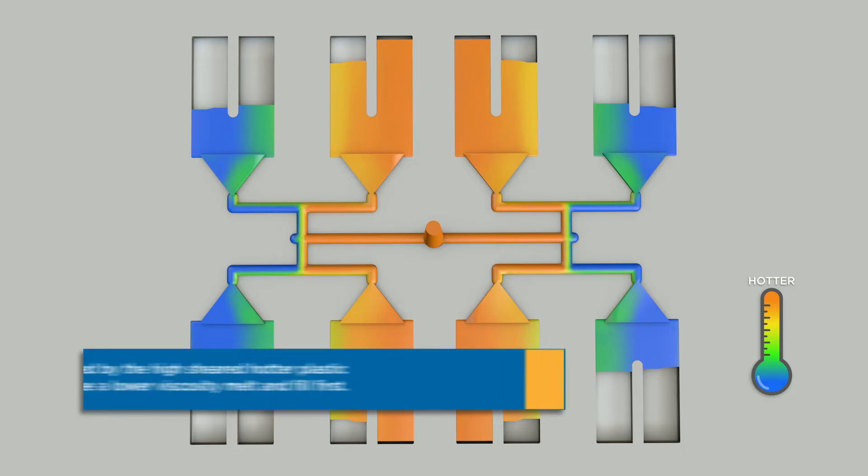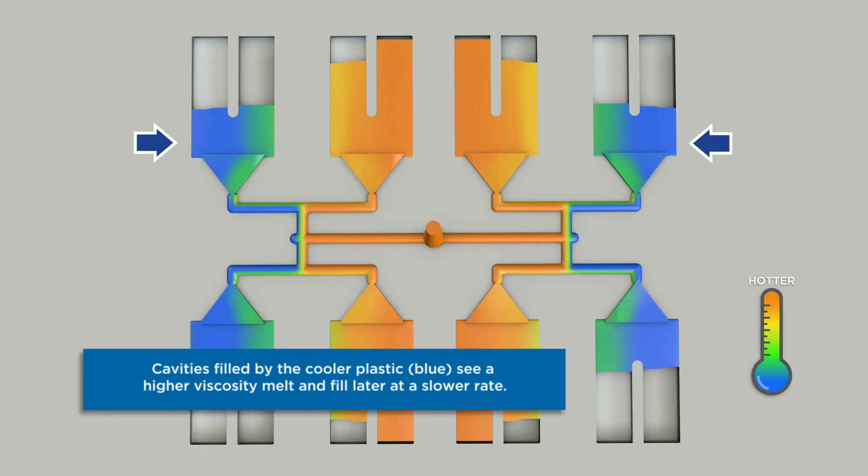Cavities filled by the high sheared hotter plastic, seen here in orange, will see a lower viscosity melt and in turn will fill first. Cavities filled by the lower sheared cooler plastic, seen here in blue, will see a higher viscosity melt and fill much more slowly.